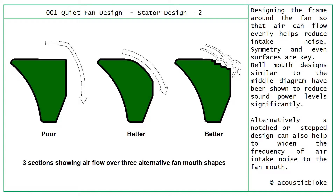Flipping the stator design on its side and cutting a section through it, we can see how air enters towards the fan. Designing the frame around the fan so air flows evenly helps reduce intake noise — symmetry and even surfaces are key. The bell mouth design is similar to what you'll see on most fan systems and has been shown to significantly reduce noise levels. A poor design would have square edges and lack of symmetry. An alternative is a notched or stepped entrance design, which can also help widen the frequency of noise from the fan mouth.